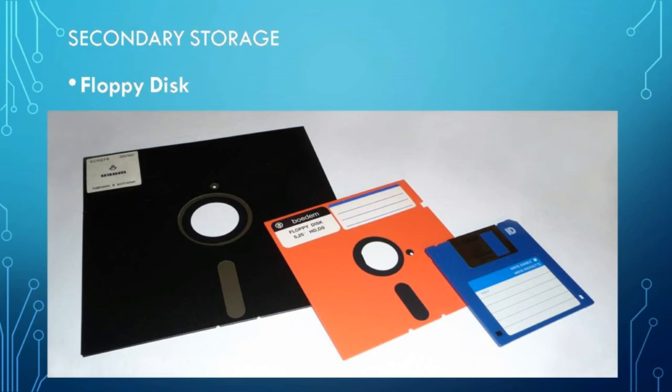Floppy disk was developed by IBM company. It is used to transfer data or software from one computer to another. A floppy disk is made up of mylar material with magnetic oxide on both sides. Initially, floppy disks were 8 inch in diameter. Later, it was replaced by 5 and 1/4 inch and 3 and 1/2 inch. Floppy disks are slower to access and the storage capacity is also low when compared to other external storage devices. Nowadays, the floppy disks are not in use.